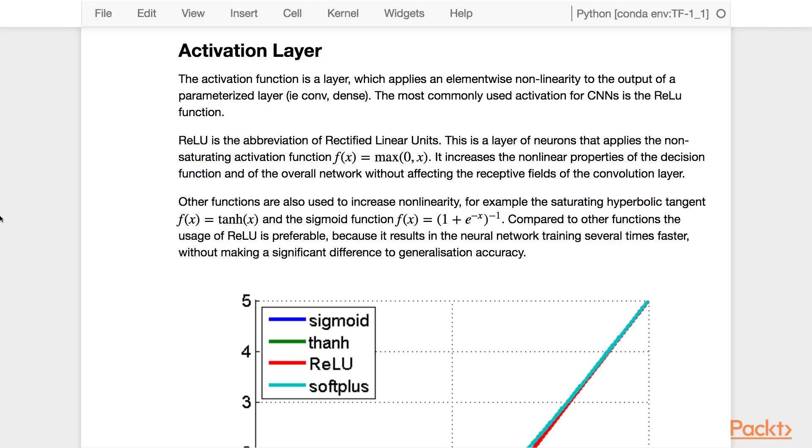The ReLU function stands for Rectified Linear Units. This is a layer of neurons that apply the non-saturating activation function max between 0 and x. It creates the non-linear property of the decision function and of the overall network without affecting the receptive field of the convolutional layer.